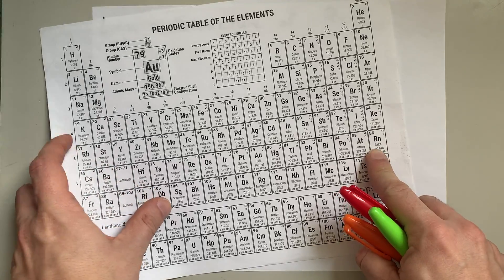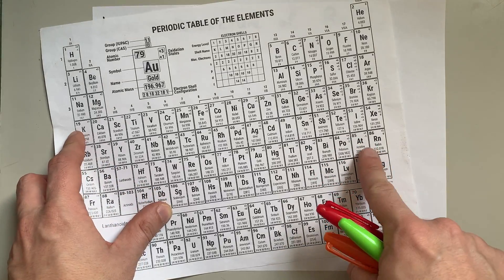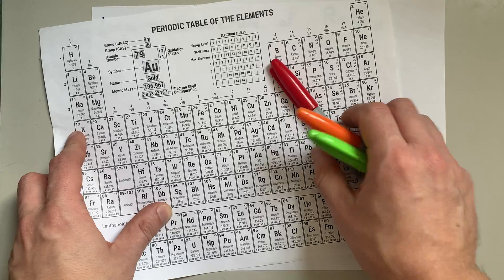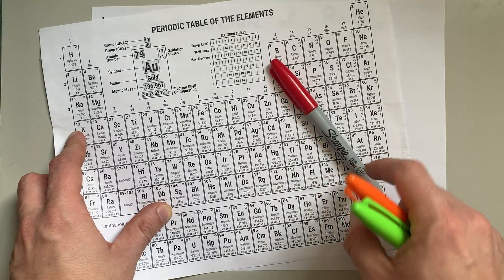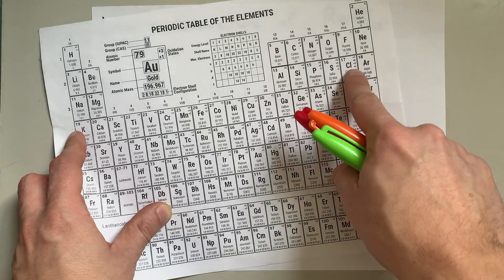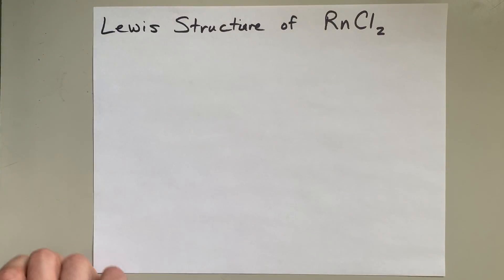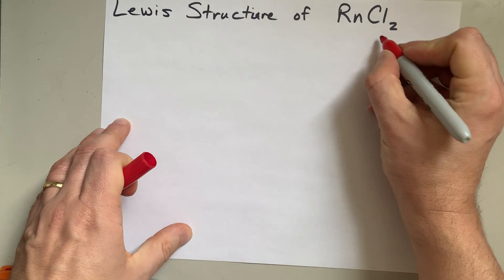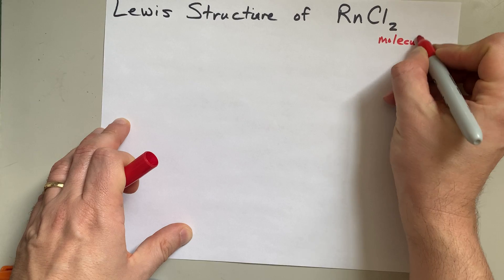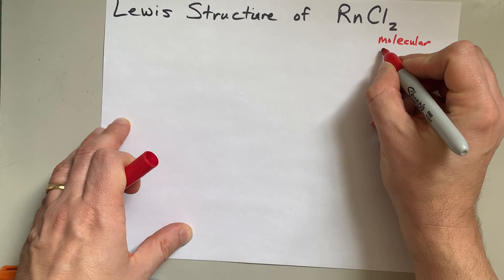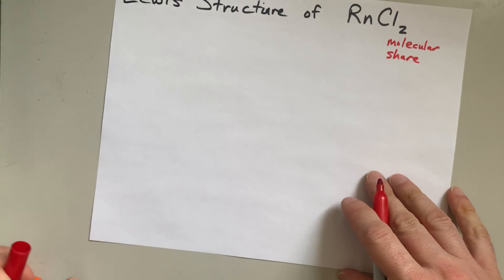Now, radon is a radioactive element, but it's a non-metal because it comes from the right-hand side of the periodic table. And chlorine is also a non-metal. What that means is that when these bond together, you're going to get a molecular compound. That means they share electrons with each other.